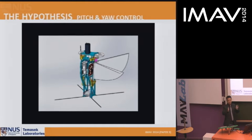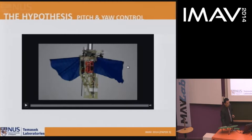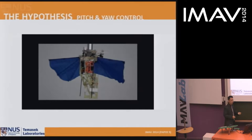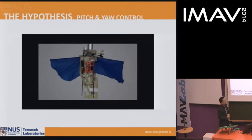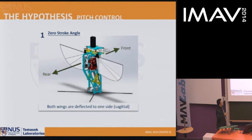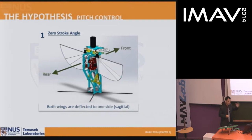A video demonstrates the mechanism working on an old, smaller platform that was abandoned because it could not carry its own weight. The setup includes a receiver and two linear servos driving a bell crank to create wing root deflection. By tilting both wings to the same side — the sagittal deflection — the mechanism is shown, and tilting in opposite directions produces a yaw motion observable in the tethered test video.